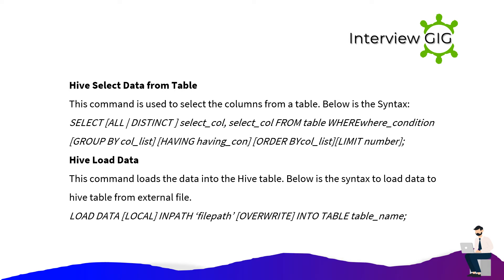Hive select data from table: this command is used to select columns from a table. The syntax is: SELECT ALL | DISTINCT select_expr FROM table WHERE where_condition GROUP BY column_list HAVING having_condition ORDER BY column_list LIMIT number.